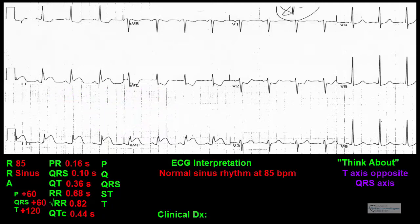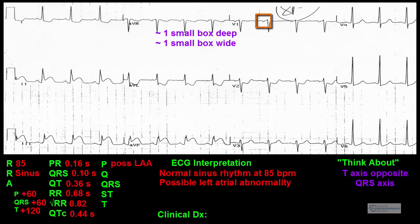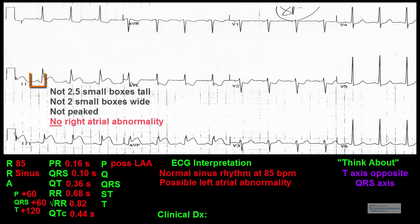Now for the wave morphologies. P waves: P waves in lead V1 are about one small box deep and one small box wide, suggesting possible left atrial abnormality. Possible left atrial abnormality can now be put into the ECG diagnosis section. The P waves in lead 2 are not 2.5 small boxes tall, 2 small boxes wide, nor peaked — therefore, right atrial abnormality is not present.